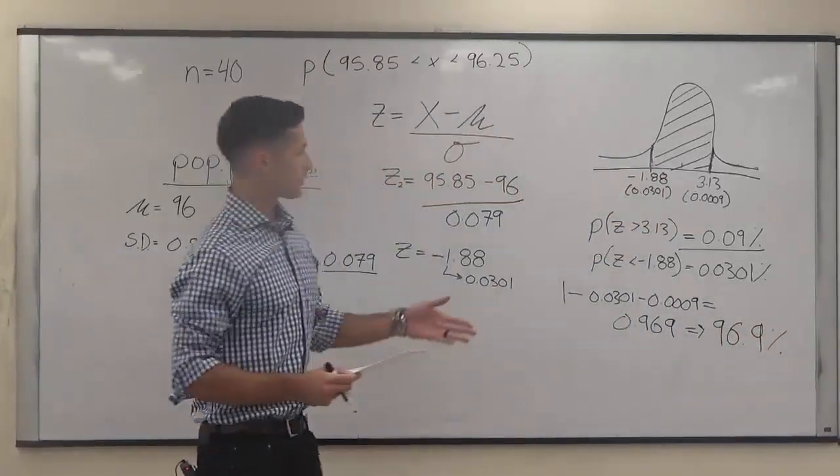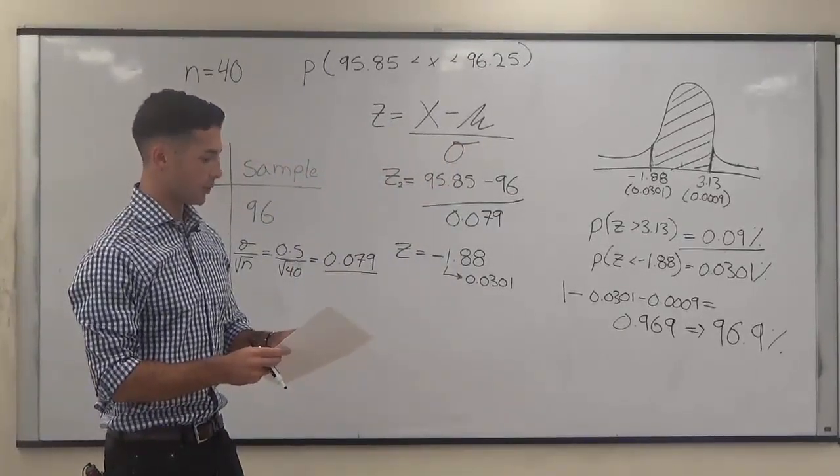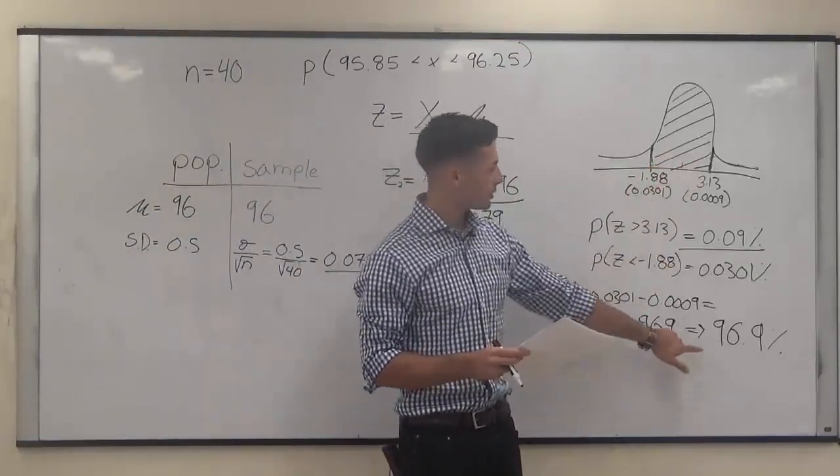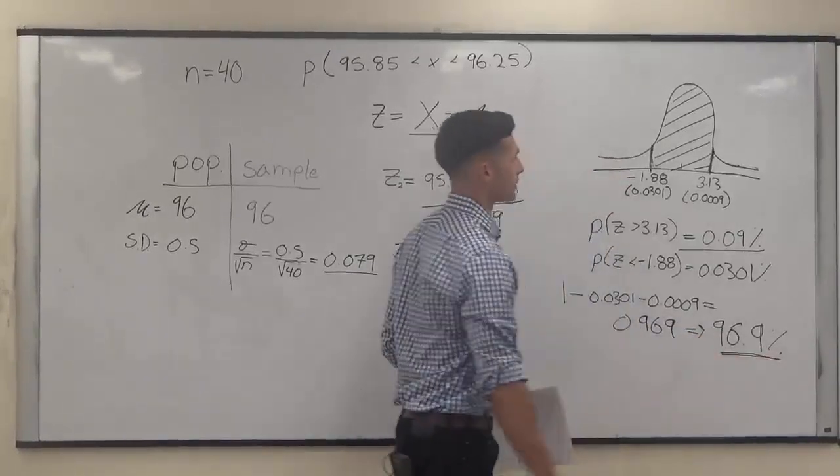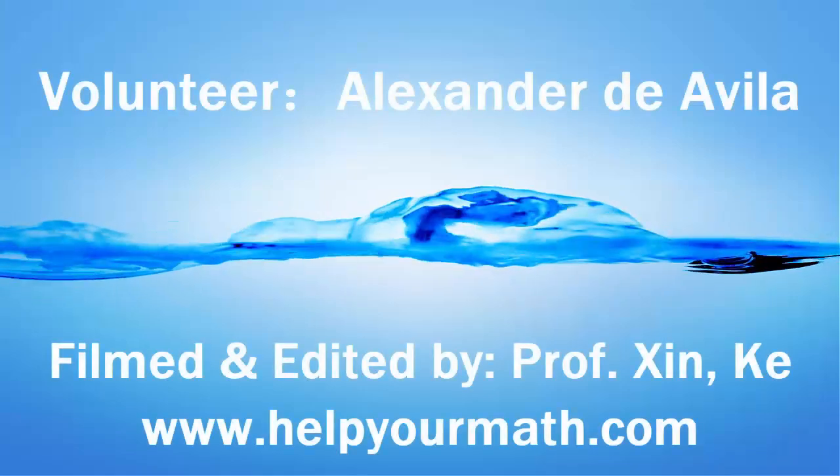So essentially, the answer to your problem is the probability that a length of a board is going to be between 95.85 inches and 96.25 inches. And that's going to be a 96.9% chance that a board falls between those lengths. So that's in the middle.